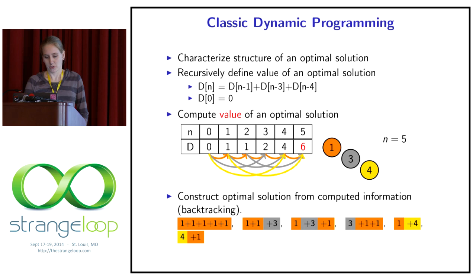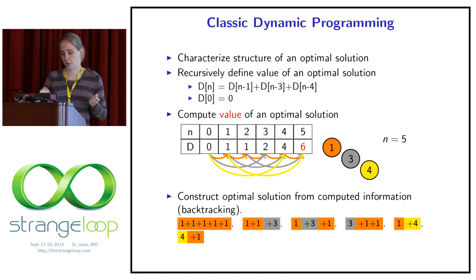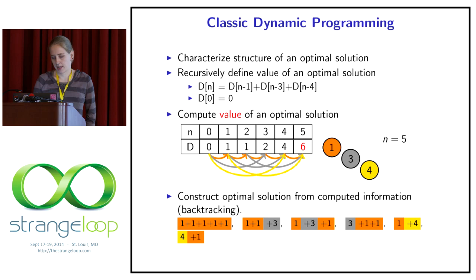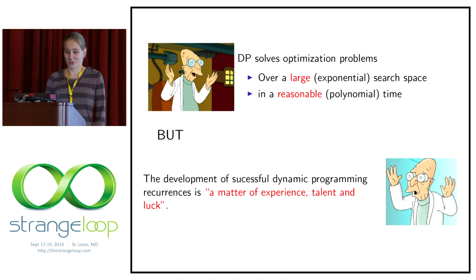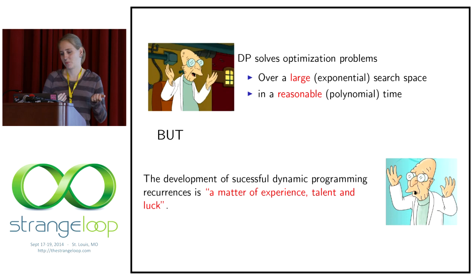The fourth step is usually the complicated one: construct an optimal solution from the computed information. So how do we get our sums back? If we have the six, how do I get my sums out? I have to go from the last position in the table backwards and figure out all the ways in which my solution was built up. In this problem there's not even an optimization step — we are simply following all paths. But we could also say we just want the minimum number of coins to decompose this.